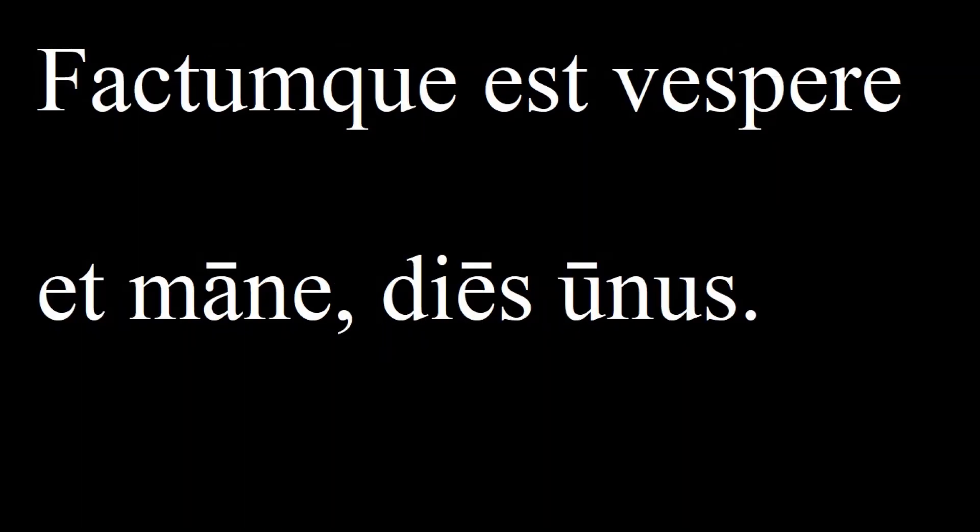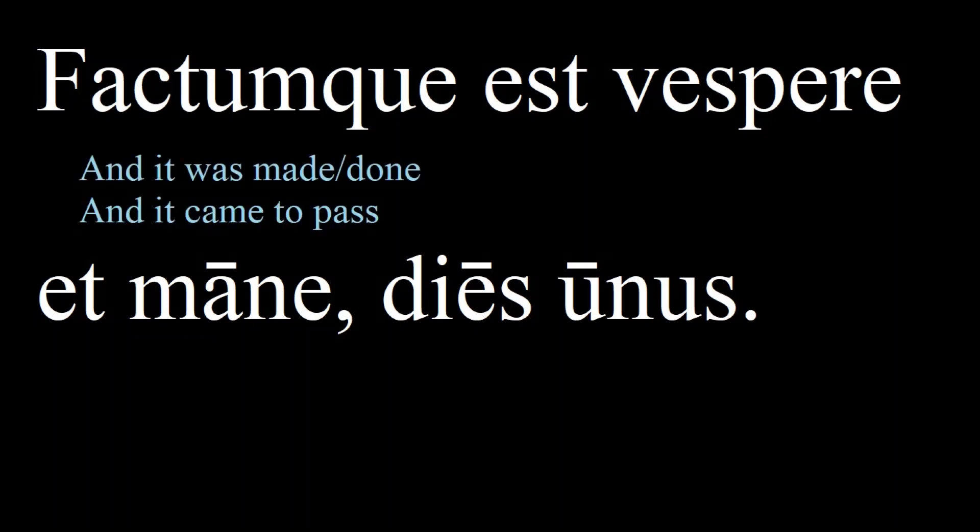Then the next line is: factumque est vespere et mane dies unus. Here again is facta est, except it is the neuter version, factum, because the unnamed subject is the generic 'it.' So the beginning of this sentence means 'and it was made,' 'and it was done,' or sometimes more poetically, 'and it came to pass.' This phrase, factumque est, is common in the Old Testament, so it's a good phrase to learn.